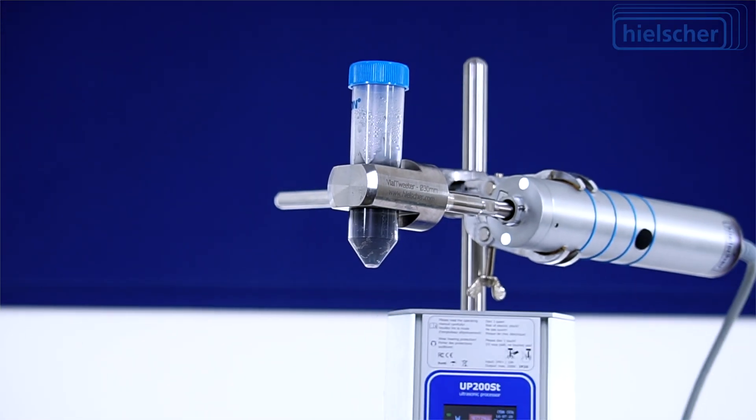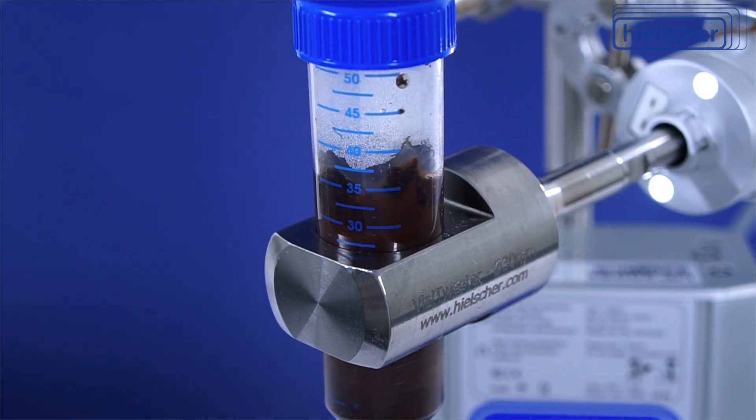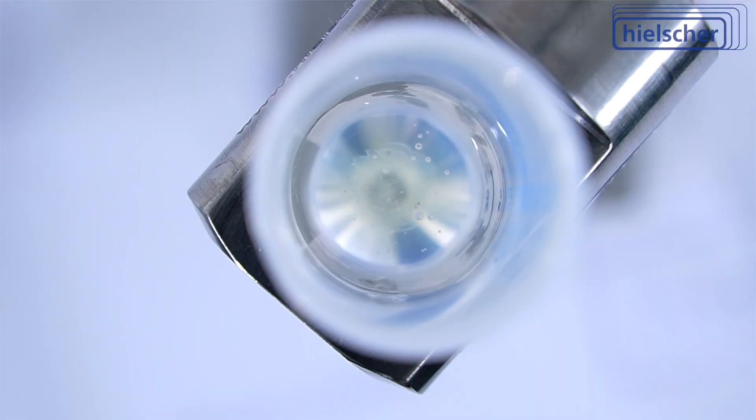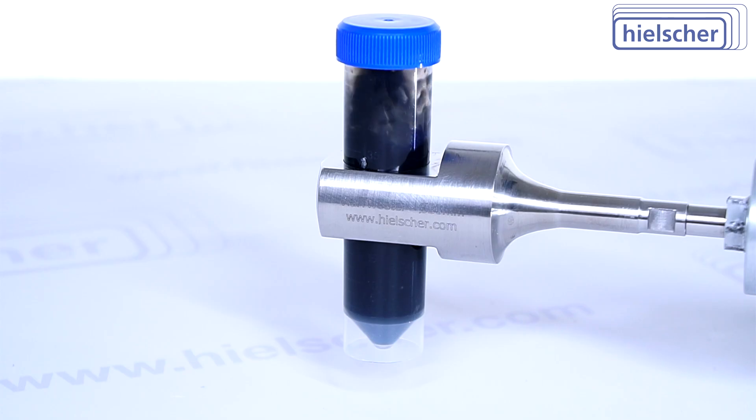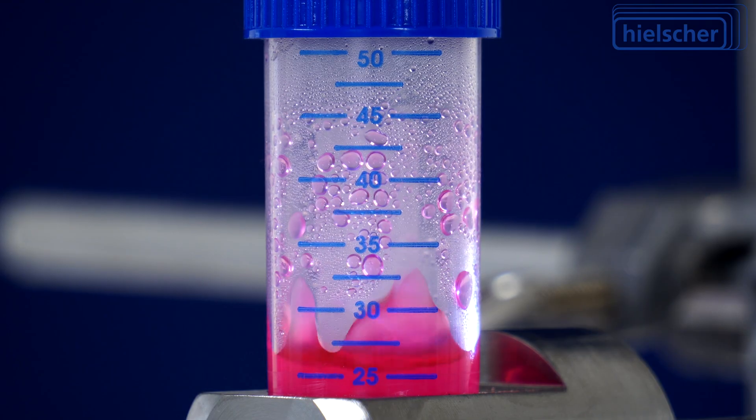In a 50 milliliter falcon tube, you can achieve powerful cell lysis, create stable emulsions, and disperse nanoparticles, all thanks to the Hielscher Vial Tweeter.